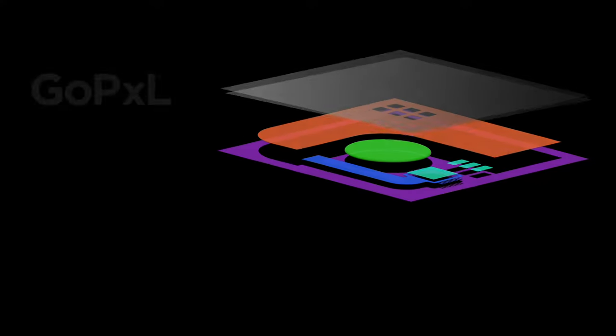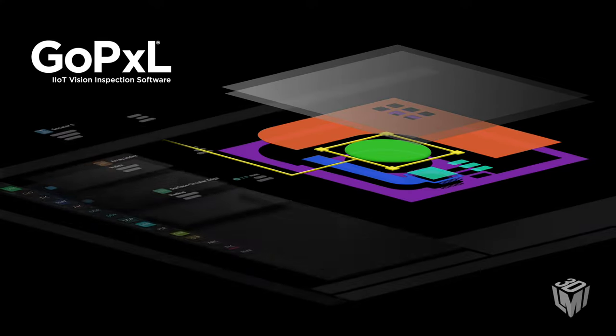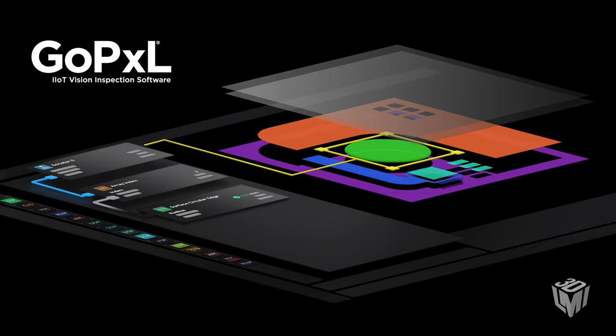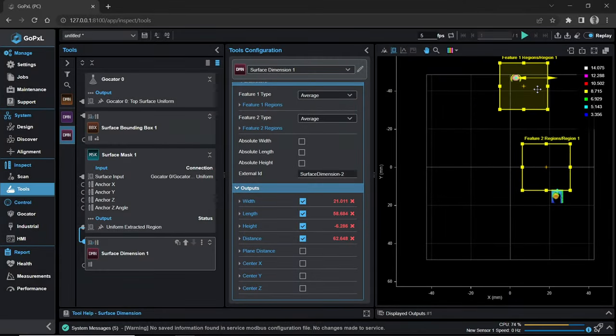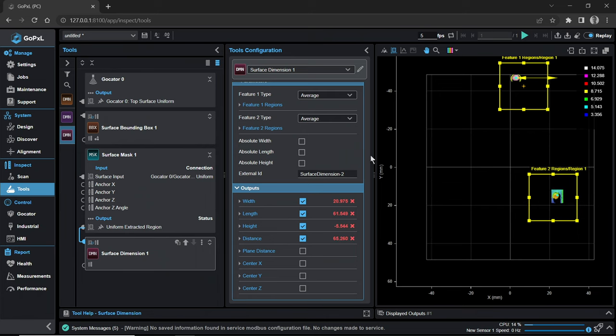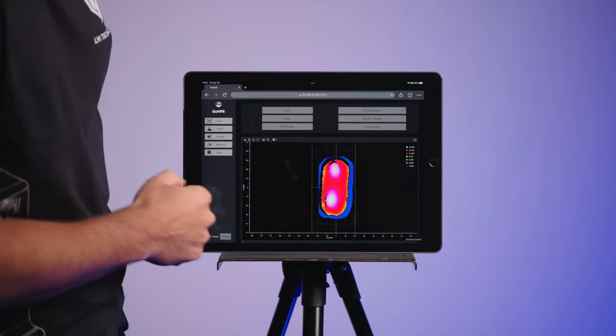G5 sensors also run GoPixel, LMI technology's latest IIoT vision inspection software that comes with smart features such as built-in measurement tools, smart filters, and a custom HMI builder.